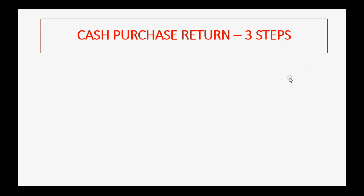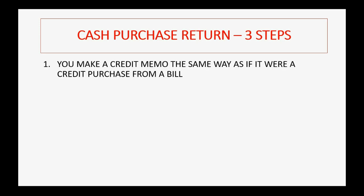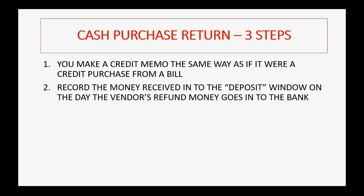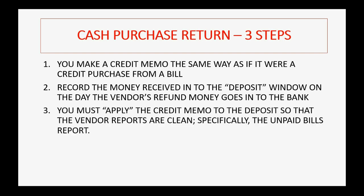Now we'll see what it's like to do a purchase return for something we paid for immediately. First, you make a credit memo the same way we just did, as if you were returning something from a credit purchase received with a bill. Then you record the money received into the deposit window on the day the vendor's refund money goes into the bank.